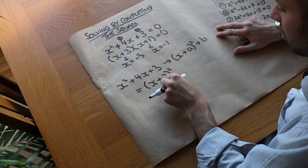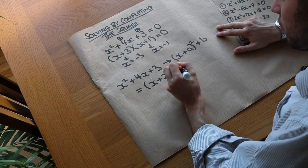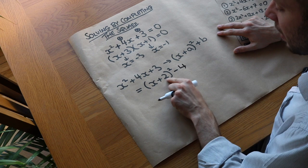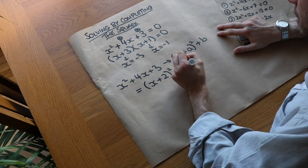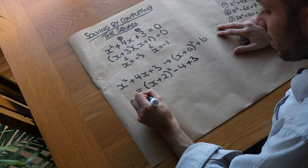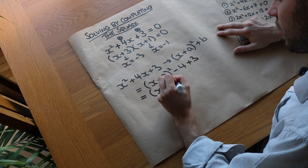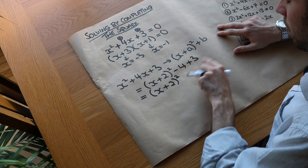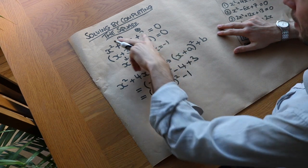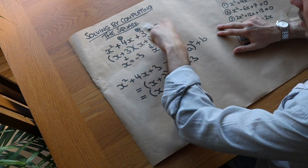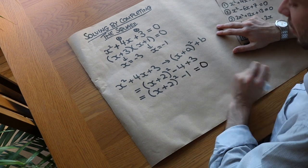If we were to expand that, it would give x squared plus 4x plus 4, because we'd have the plus 2 times plus 2 in the expansion. But we don't want that plus 4, so we subtract it — we square that number and subtract it. We've still got that plus 3, so that simplifies to x plus 2 squared minus 4 plus 3, which is minus 1. But we said this was equal to 0, so we've got x plus 2 squared minus 1 equals 0.